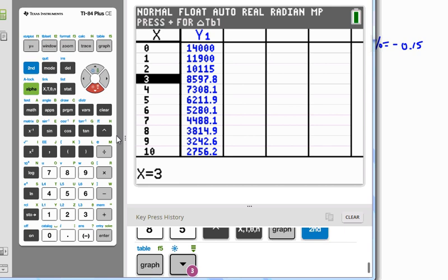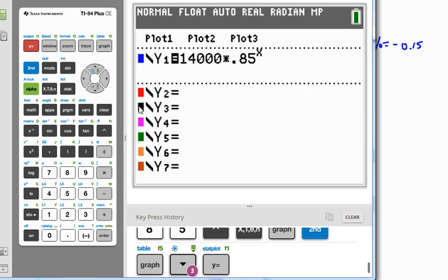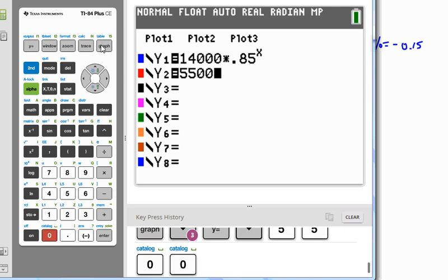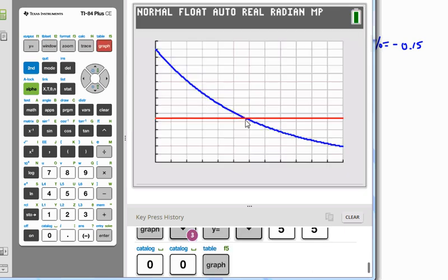But we can go to our function editor and put in $5,500 and graph. And we see the intersection point.